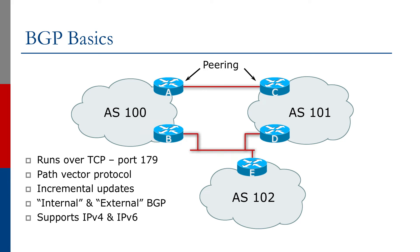BGP is a path vector protocol. What that means is the route announcements that you learn via BGP carry a list of which ASs were traversed to get there. If you learn the same prefix from different peers, then comparing the AS paths is one of the ways you can choose which route you prefer. The path vector also performs a very important role by preventing routing loops. If you see your own AS number in a path vector, then you know that the route already passed through your AS, and so you can discard it.